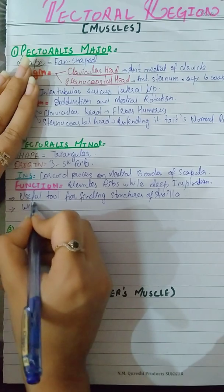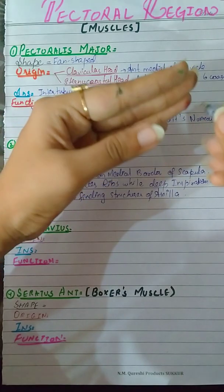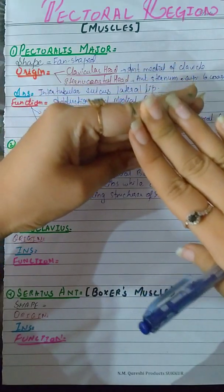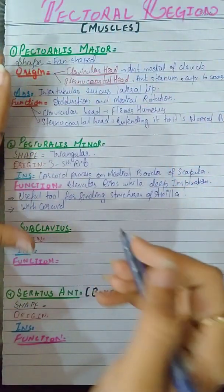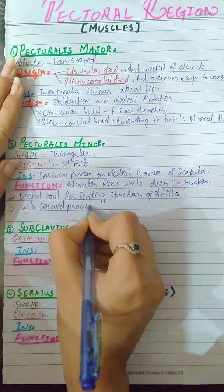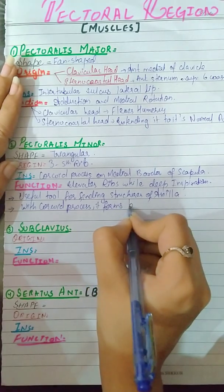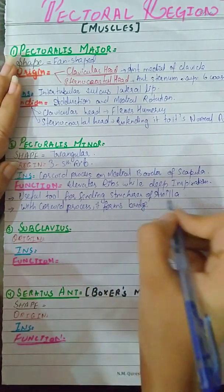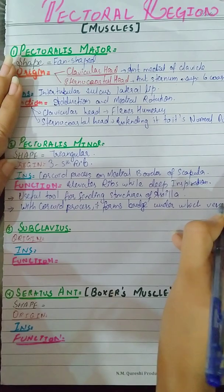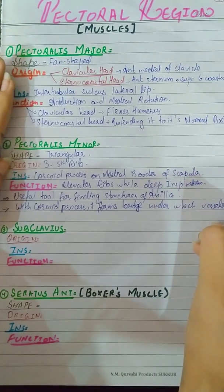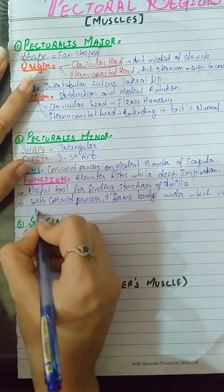With the coracoid process it forms a bridge under which vessels and nerves pass.